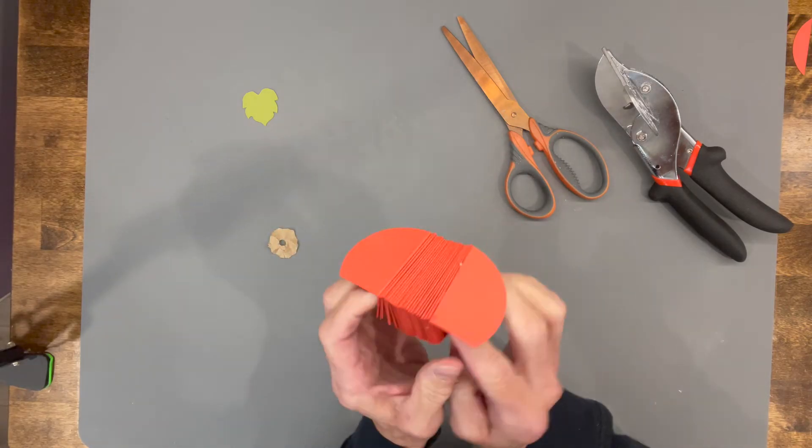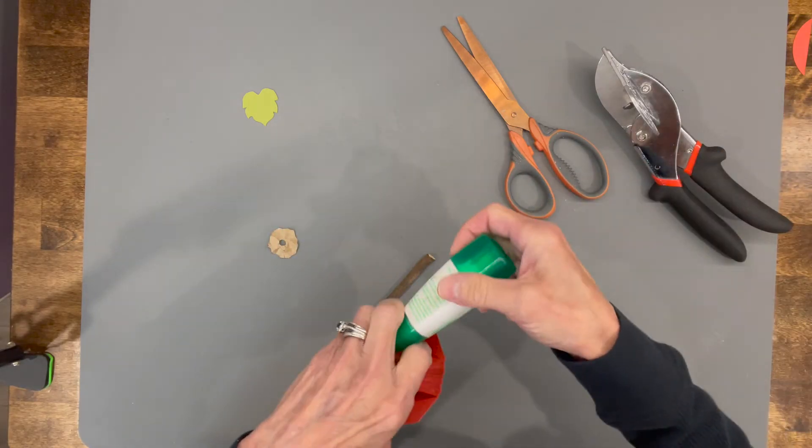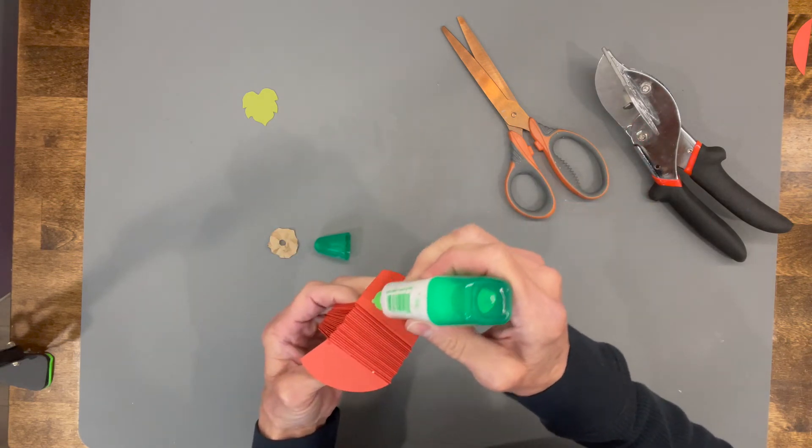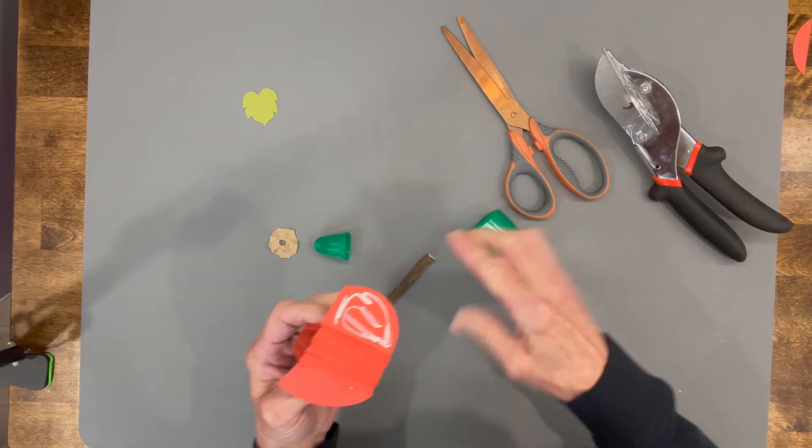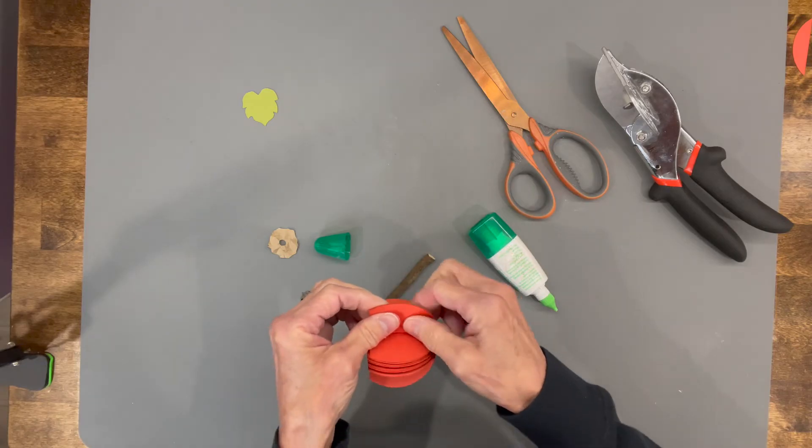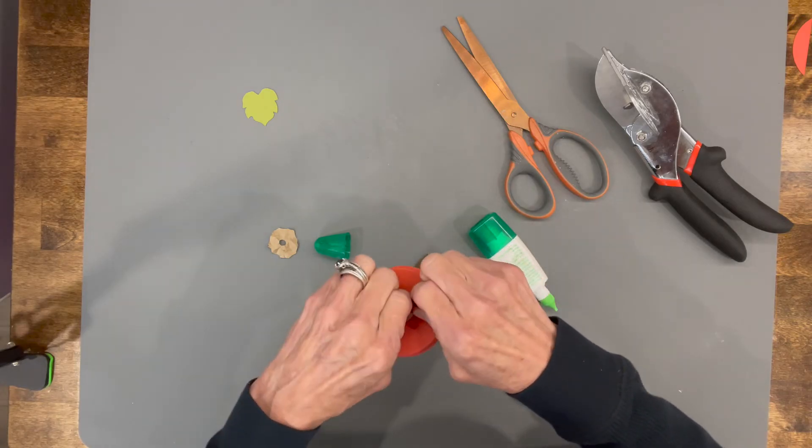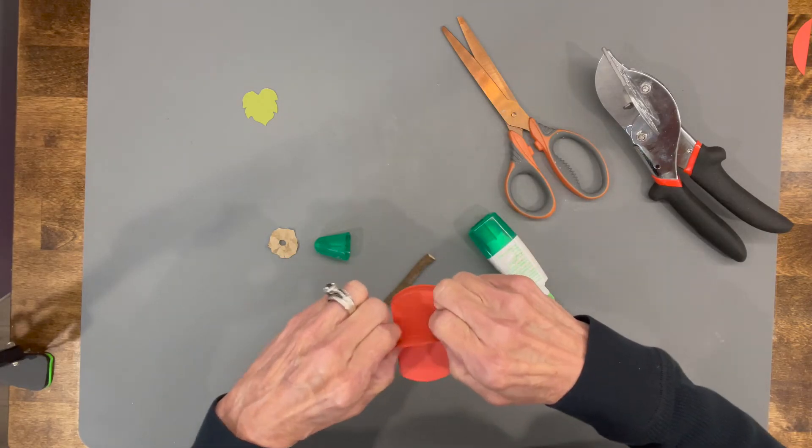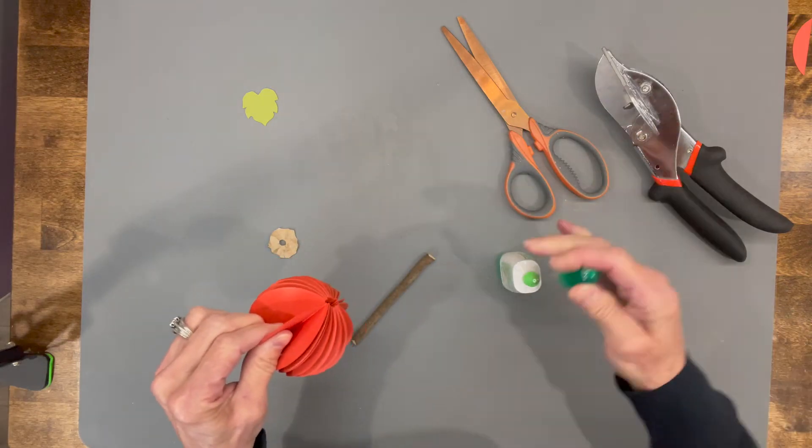Next we're going to take our pumpkin and close it up. We're going to glue the two opposite sides together—glue as close to the edge as you can on both of those. Then when you squeeze it together, squeeze it and make sure you get all the way down to the center. You want to make sure that this gets sealed up good.